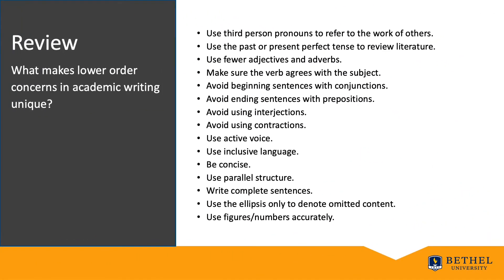This has been a presentation on the lower-order concerns of academic writing. Please avoid the temptation to ignore them, because others may not view you as credible if your writing is biased and riddled with grammar, punctuation, and spelling errors. Let's review what makes lower-order concerns different in academic writing: use third-person pronouns to refer to the work of others; use past or present perfect tense to review literature; use fewer adjectives and adverbs; ensure verb agreement with the subject; avoid beginning sentences with conjunctions; avoid ending sentences with prepositions; avoid interjections and contractions; use active voice; use inclusive language; be concise; use parallel structure; write complete sentences; and only use the ellipsis for omitted content.